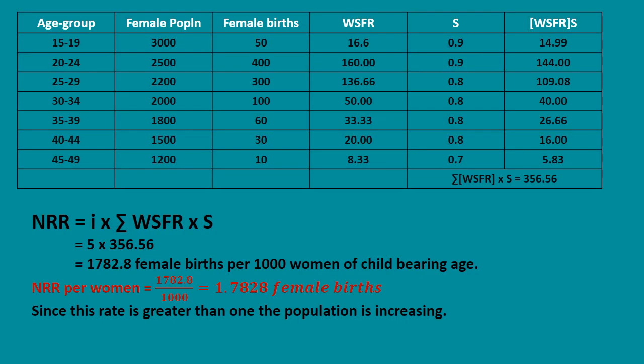Now let us recreate the table with columns: age group, female population, female births, and a new column for WSFR — the Women's Specific Fertility Rate. NRR is important because it accounts for current fertility and current mortality. The WSFR for each age group is calculated as female births divided by female population, multiplied by 1,000.